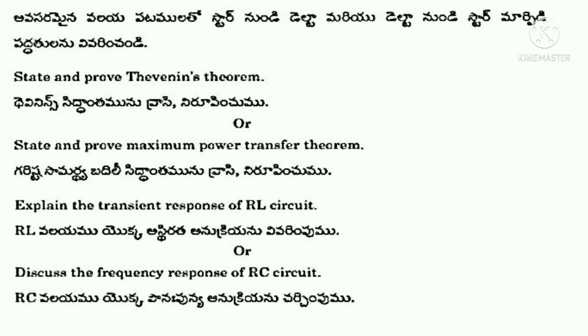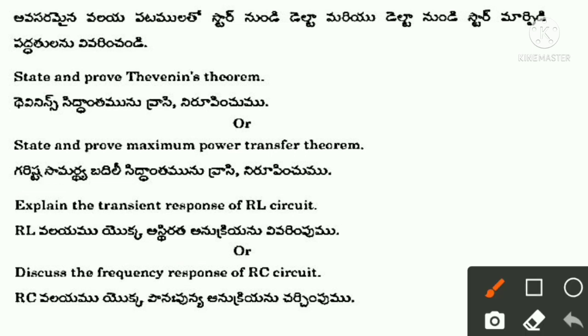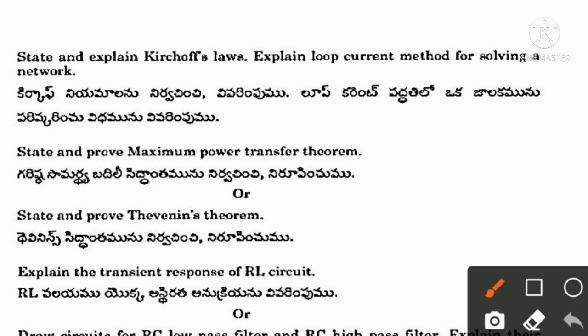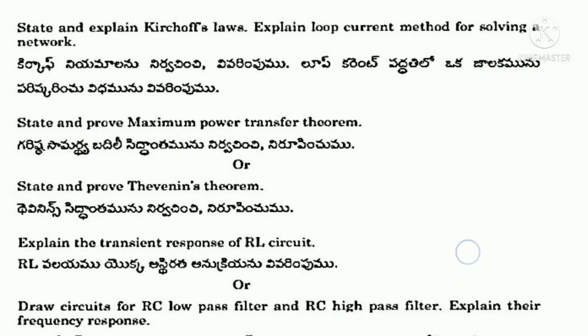Additional essay questions: discuss star-to-delta and delta-to-star conversion with necessary circuit diagrams, state and prove Thevenin's theorem, state and prove maximum power transfer theorem, explain the transient response of RL circuit, discuss the frequency response of RC circuit and RL circuit — one or two questions from these are expected. State and explain Kirchhoff's law (appearing third time — very important), state and prove maximum power transfer theorem, state and prove Thevenin's theorem (second time), explain transient response of RL circuit (second time).